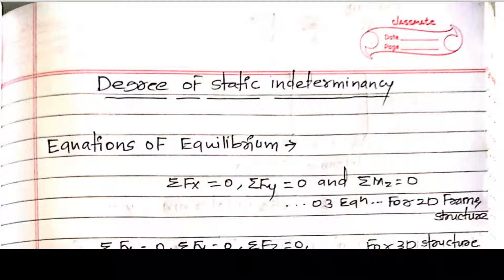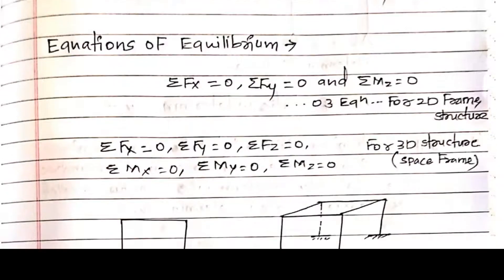So what is meant by static indeterminacy? First of all we will revise some concepts from Structural Analysis 1 — the equations of static equilibrium. If you are considering a plane frame or plane structure, the equations of equilibrium are: summation Fx = 0, summation Fy = 0, and summation M = 0. This is for a 2D plane or 2D structure.